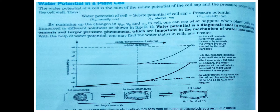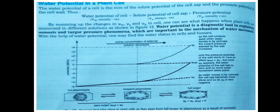Water potential is the diagnostic tool for explaining osmosis and turgor pressure phenomena, which are important in the mechanism of water movement. In a fully plasmolyzed cell placed in a hypotonic solution, continuous inward movement of water takes place. As water enters, the plasma membrane becomes turgid, occupying the entire space of the cell wall. This process continues until turgor pressure becomes equivalent to wall pressure potential — that is what the graphical representation explains.